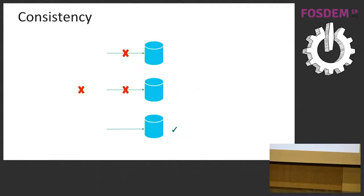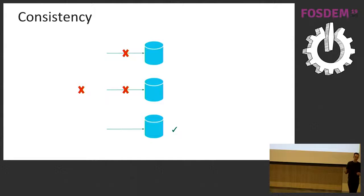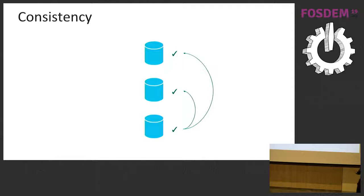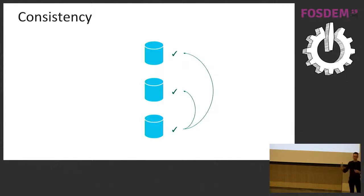There is a peculiarity: if we're doing a quorum write and two replicas fail, only one replica acknowledges the write and the user receives an error. But that one replica did store the new value, so repair will eventually propagate it to all other replicas. So the user write failed, but the value made it into the system and will be observable by future reads.